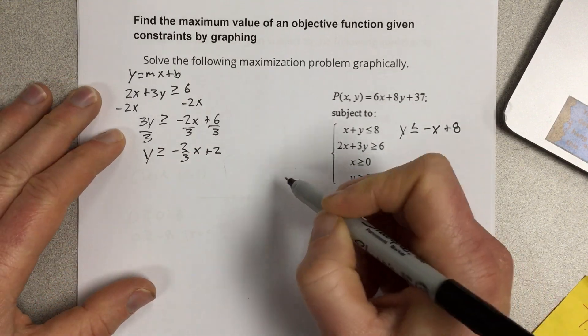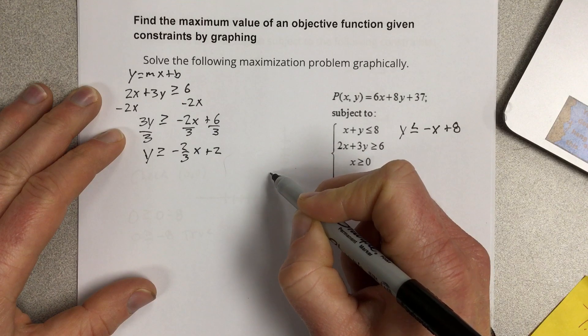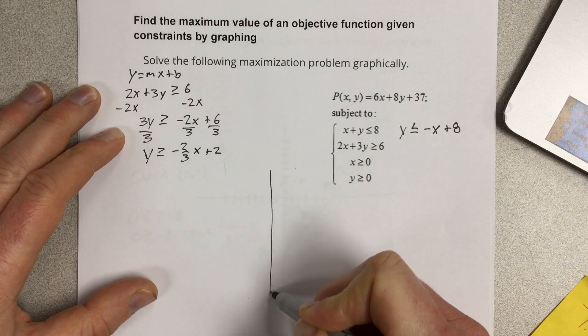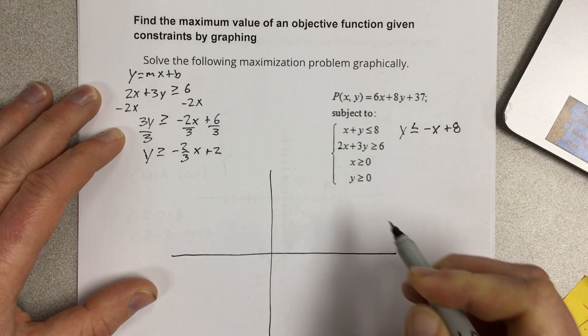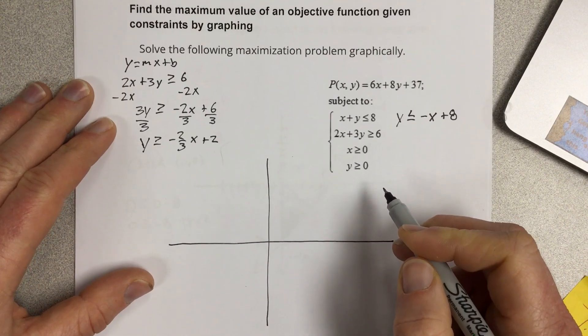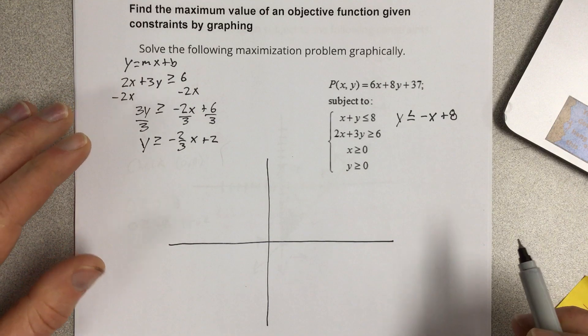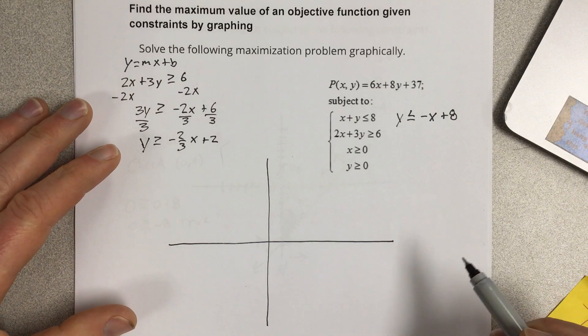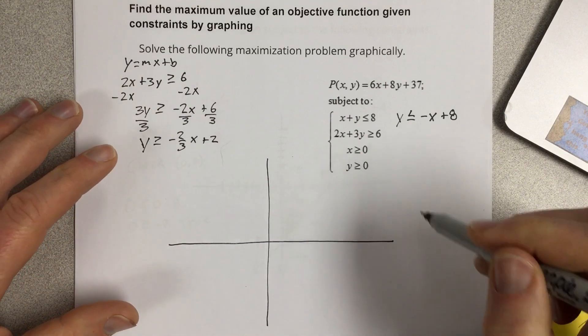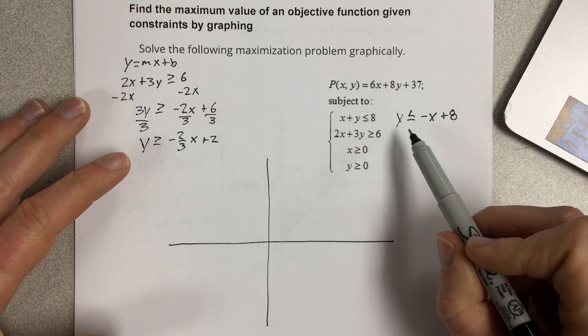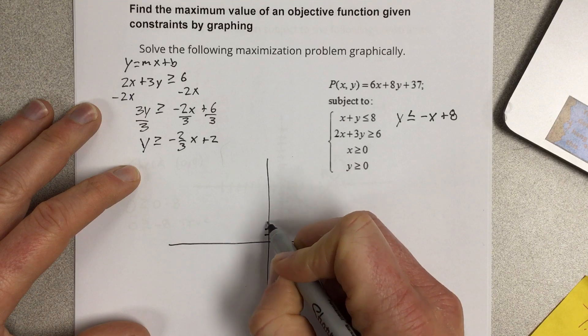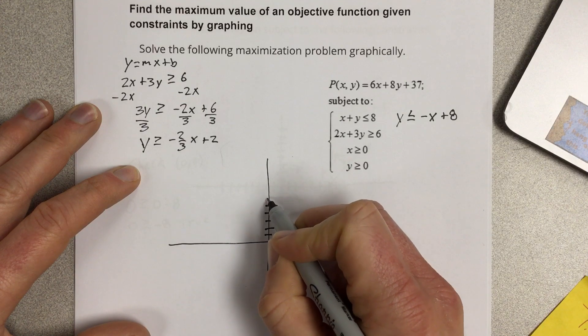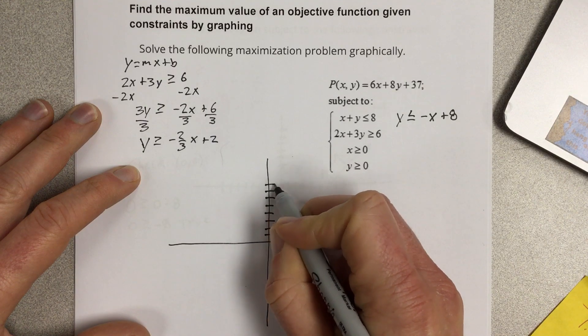Now I'm going to go ahead and draw this coordinate plane. I've got to be pretty specific when I draw this because I want to make sure that I can clearly see where the edges of our region are. So I'm going to plot a lot of points.